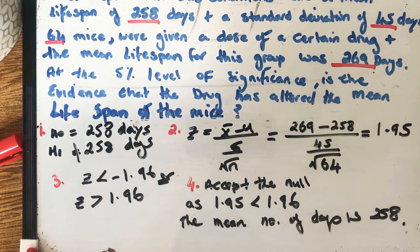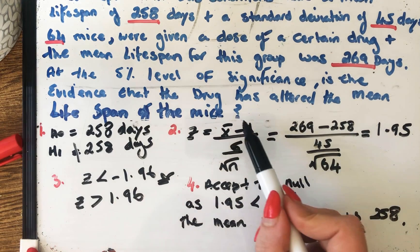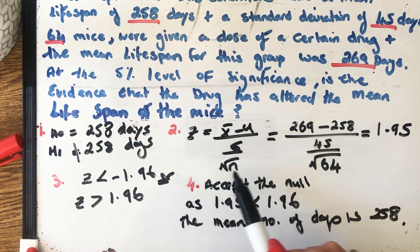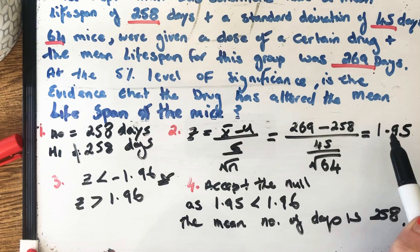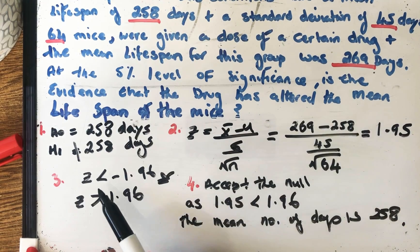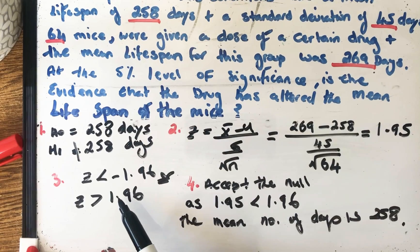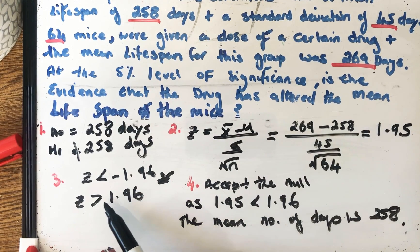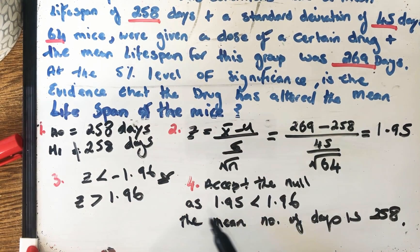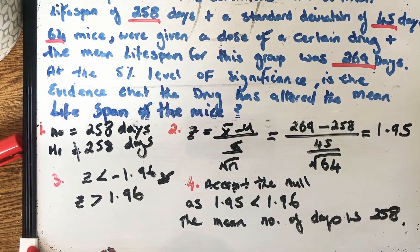So there we go. So just to recap again, it's very important that you remember that this formula is in the log tables. You get a value for Z. Then you see is your Z value bigger or smaller than these numbers here, which you need to learn off. I can't stress that enough. Learn those off. And then you can write down whether the statement is going to be accepting the null or rejecting the null.